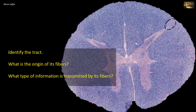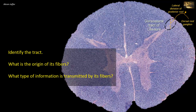Identify the tract. What is the origin of its fibers? What type of information is transmitted by its fibers? The tract is located between the peripheral margin of the cord and the tip of the dorsal horn — it is the dorsolateral tract of Lissauer. Unmyelinated or lightly myelinated axons of the lateral division of the dorsal root enter through the lateral division of the posterior root. They ascend and descend within the dorsolateral tract for two or three segments above and below the level they enter the cord, and then synapse on neurons of the dorsal horn. They transmit pain and temperature sensations.